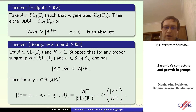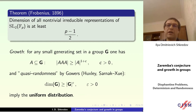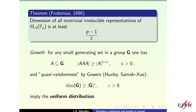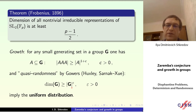They used two tools: Helfgott's growth result and the fact that the dimension of all non-trivial irreducible unitary representations of SL_2(F_p) is at least (p-1)/2, a famous result of Frobenius. They proved the very general fact that if one has growth in Helfgott's sense and quasi-randomness in the sense of Gowers — meaning the dimension of all non-trivial representations is greater than |G| to the epsilon — then these two facts automatically imply the uniform distribution.